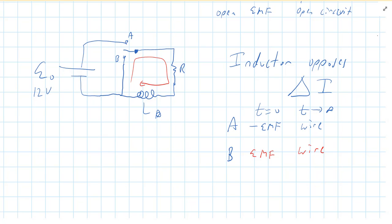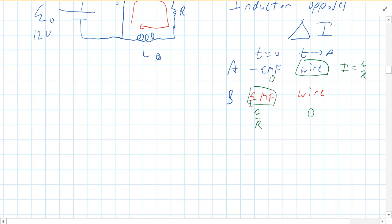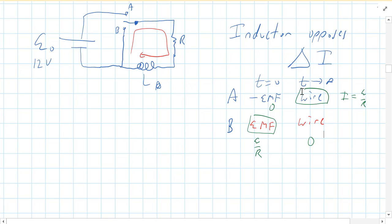When you move the switch to A, in the long term your current should be E over R, because the inductor is as if it's not even there and you just have a voltage and a resistance. When you first move the switch to B, the current should also be E over R and then decay to zero. So when you move the switch to A, current starts at zero and increases to E over R; when you move to B, it was E over R and eventually decreases to zero.